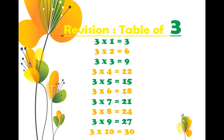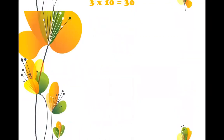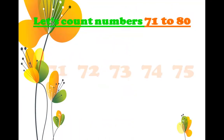3 fours are 12, 3 fives are 15, 3 sixes are 18, 3 sevens are 21, 3 eights are 24, 3 nines are 27, and 3 tens are 30. So this is the table of 3. I hope you have learned it by now.